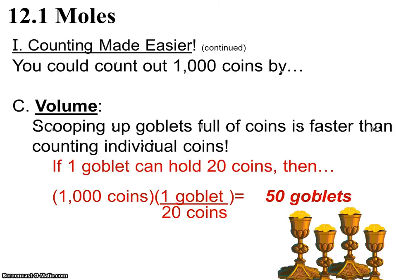You could also do it by volume. If you were really bored and you figured out that one of your beautiful golden goblets you got from a treasure raid could hold 20 coins, then you could say, well, 1,000 coins at 1 goblet holding 20 coins apiece means you need 50 goblets worth. So all of these would be faster.